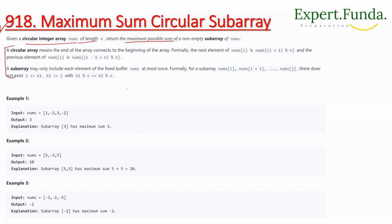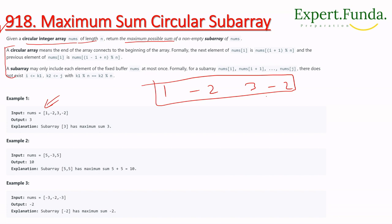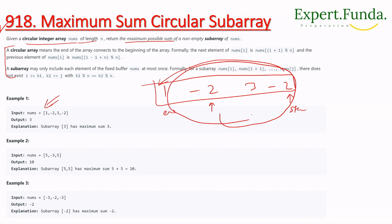Let's look at the example: we are given [1, -2, 3, -2]. Circular means if you start at one position, you can come back to that same position — you can wrap around. If this is your start, your end can come back here. That's what a circular subarray means.